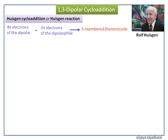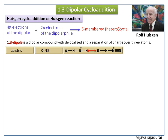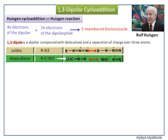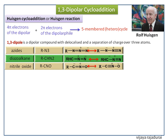1,3-dipolar compounds have one or more heteroatoms. These compounds have delocalized charge and a separation of charge over 3 atoms. Examples are azides, diazoalkanes, nitrile oxides, etc. Their mesomeric structures are shown here.